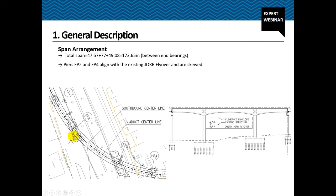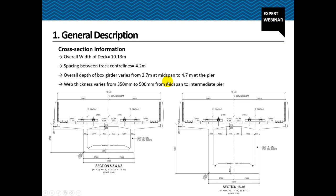Cross section information. The overall width of the deck is 10.13 meters. Spacing between the track center lines which carries the metro carriage is 4.2 meters. And overall depth varies. It's got a tapered profile from the pier location where the depth is 4.7 meters to the mid span or the end span location where the depth is 2.7 meters. Similarly, web thickness varies to take care of the shear considerations.